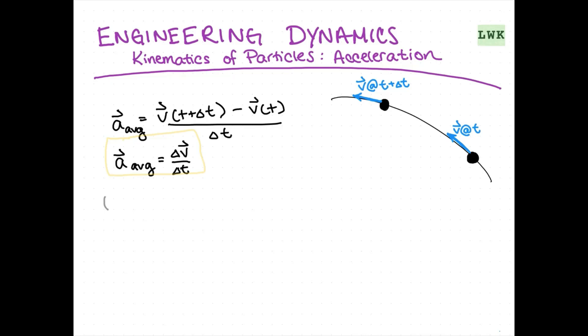If we take the limit as t approaches zero, like we did for velocity in our last video, we're going to write the limit as t approaches zero of our average acceleration.